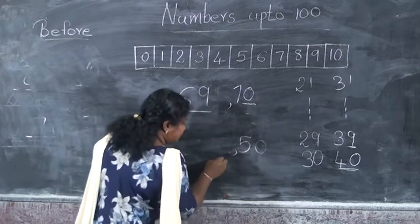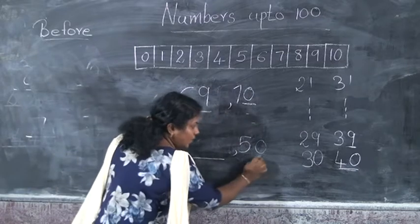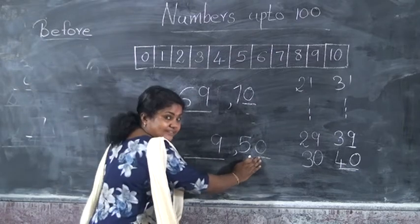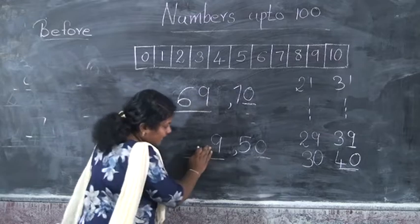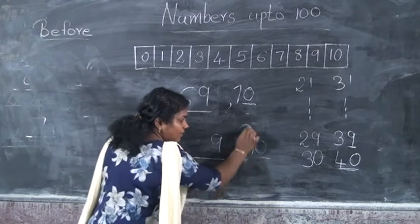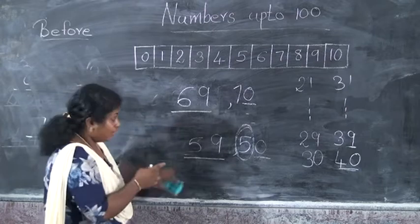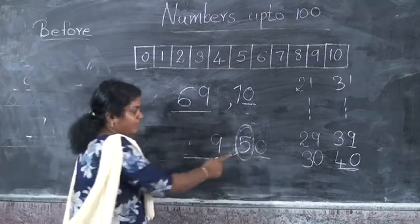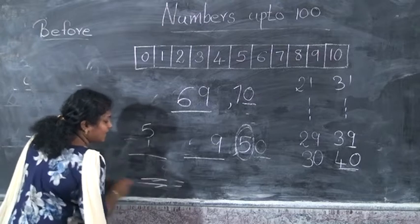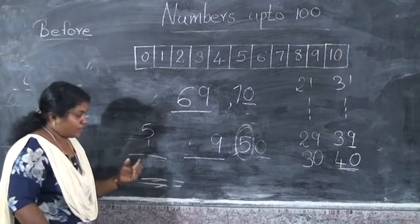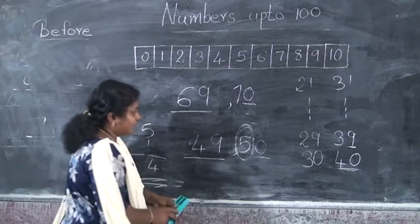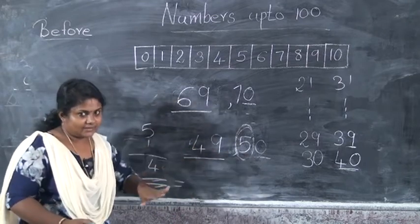I have written 50. Which is the before number of 50? In the 1s place, it is 0, so we want to write 9 in the 1s place. And in the 10s place, it is 5. Do we write 5 here? No, this is not right. We have to subtract 1 from this 5. 5 minus 1 — count after 1: 2, 3, 4, 5 — the answer is 4. So we write 4 here. The before number of 50 is 49.